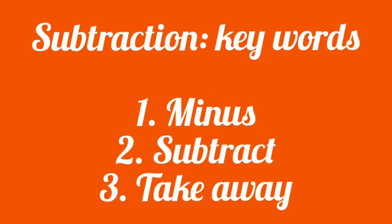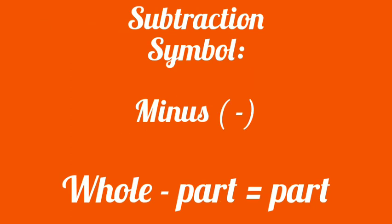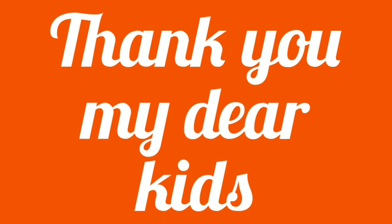The most important keywords used in word problems are: minus, subtract, and take away. These are the important symbols used in subtraction. The symbol for minus is a hyphen, and this symbol is used to denote subtraction. We have used the number bond formula — whole minus part equals part — for subtraction.